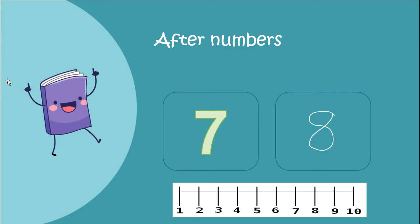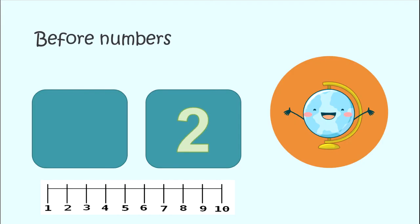Now that you have your after numbers down and know what numbers come after, we're going to look at before numbers. Before numbers are the numbers that come in front. So what number comes before 2? What number comes in front of 2? Well, if we look at our number line, here's 2 — what number is in front of 2? 1! Yes, did you say 1? You would be right. 1 comes in front of 2.